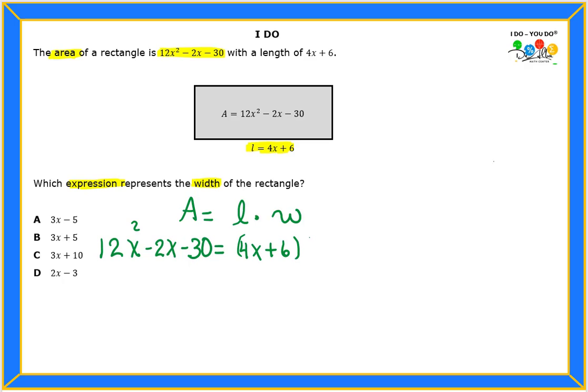The length is 4x + 6, and I'm going to multiply by the width, which I don't have. So let's write down w. So if I want to leave w by itself, then I will need to divide by 4x + 6.